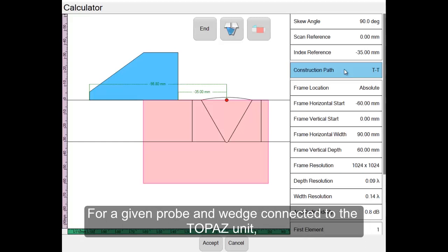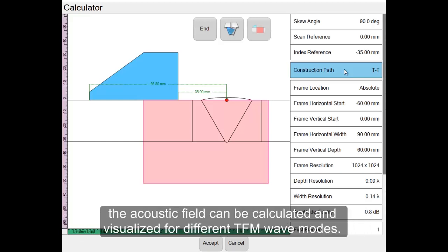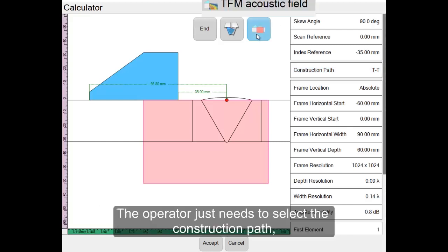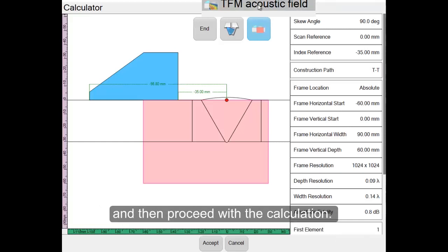For a given probe and wedge connected to the Topaz unit, the Acoustic Field can be calculated and visualized for different TFM wave modes. The operator just needs to select the construction path and then proceed with the calculation.